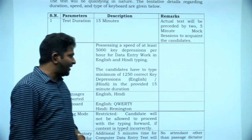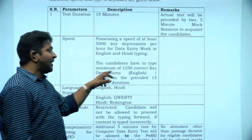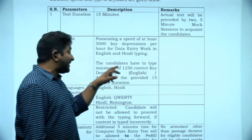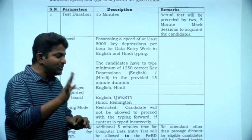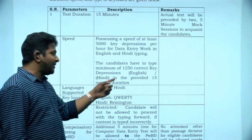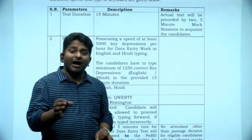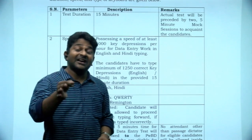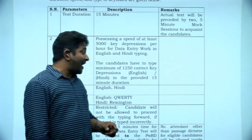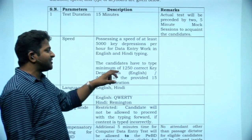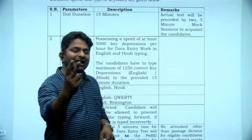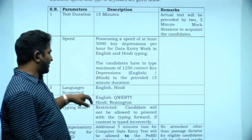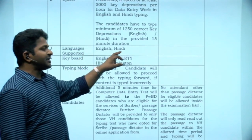The candidate has to type a minimum of 1250 correct key depressions in the provided 15 minutes. That means 15 into 60 seconds equals 900 seconds, and in 900 seconds you just need to type 1250 keys — meaning in two seconds you should be able to type three keys. It is an easy job.